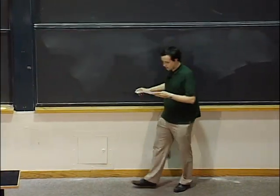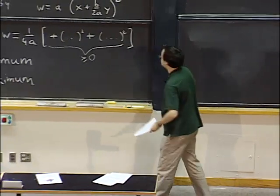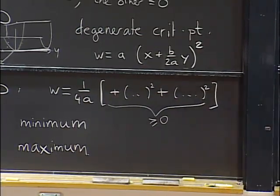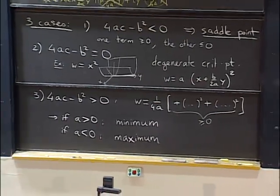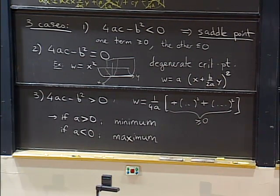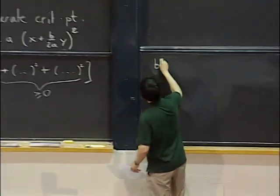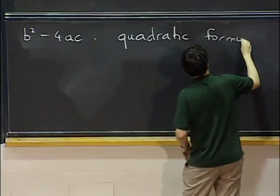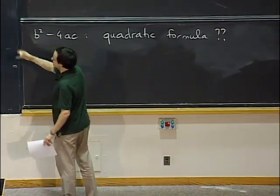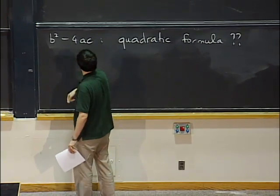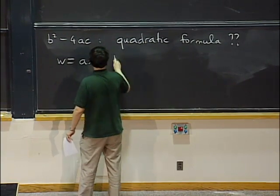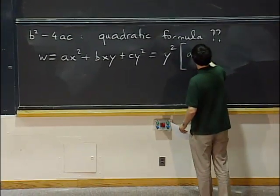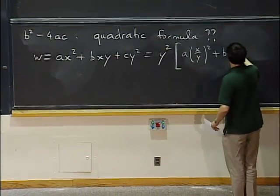We noted that 4ac − b² is essentially the same as the discriminant from the quadratic formula — just with opposite sign. Now let's move to a general function. We want to look at second derivatives. How many second derivatives do we have? We can take the derivative first with respect to x and then again with respect to x, giving ∂²f/∂x², or f_xx. Then there is f_xy — derivative first with respect to x, then y.